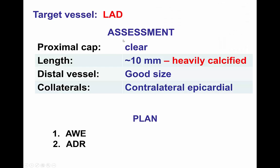To summarize, this is a patient with an LAD CTO with a clear proximal cap, short length of occlusion but heavy calcification, good size of the distal vessel, and contralateral epicardial collaterals that did not seem favorable for the retrograde approach. Therefore, the plan was for antegrade wire escalation, and if that failed, antegrade dissection and re-entry.